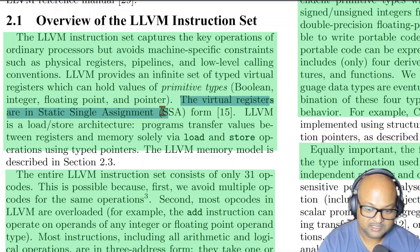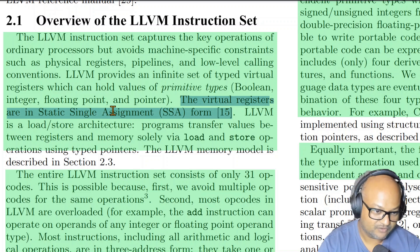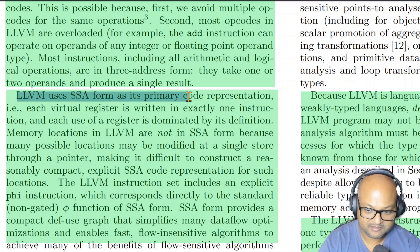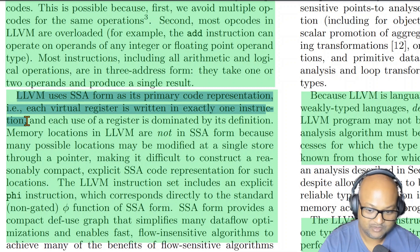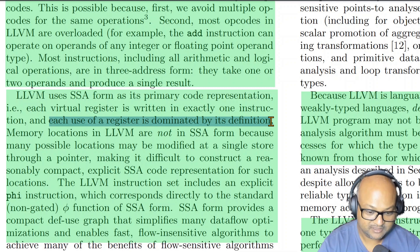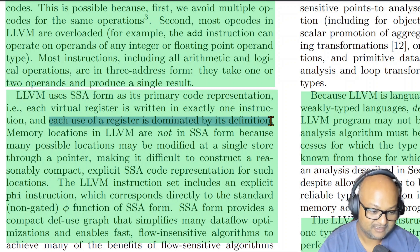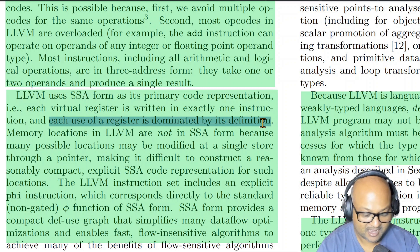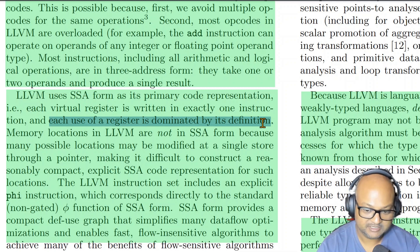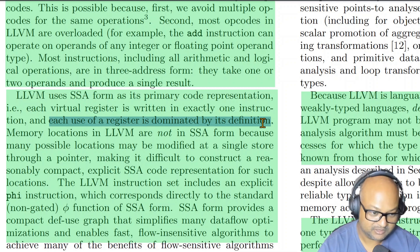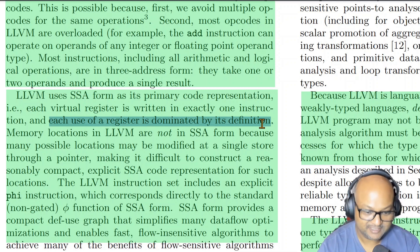The other important design choice for this intermediate representation is that it is in static single assignment form. SSA probably deserves a whole video to itself, but very briefly, the main idea behind SSA is that each virtual register is written to exactly once. This gives you the nice property that whenever you see a use of a virtual register, you know exactly the one place where that value was first assigned. This is a really nice property for compiler optimizations, because one very fundamental idea when optimizing is to trace each use back to where it was defined, and SSA makes that very explicit and easy.